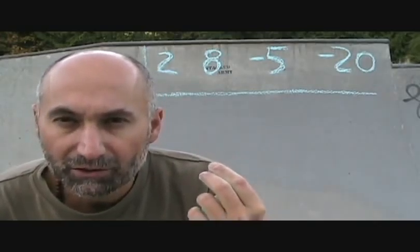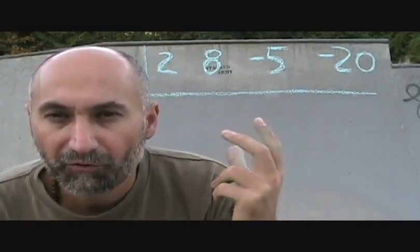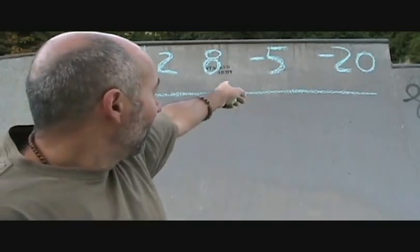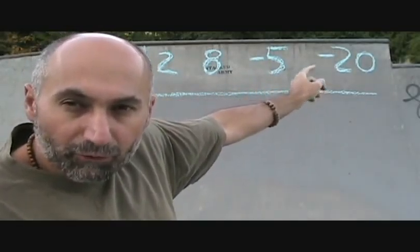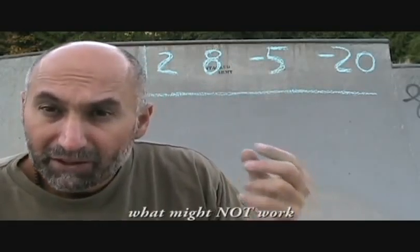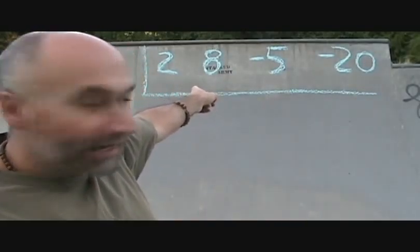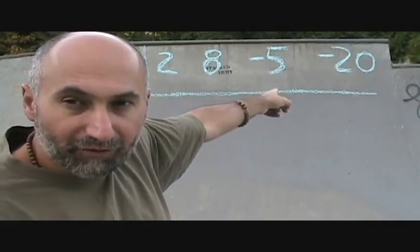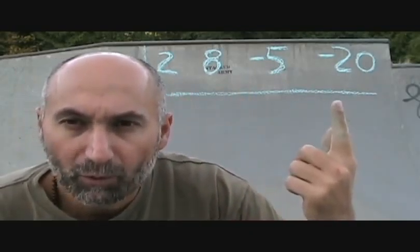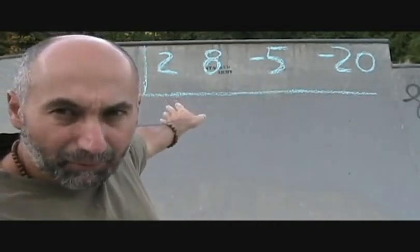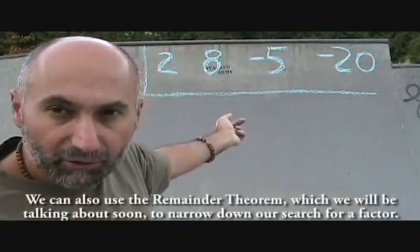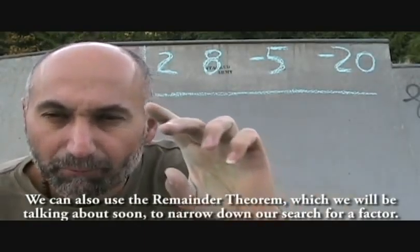The more of these you do, the better idea you'll get of what the possible factor is going to be. Looking at this, you have a 2 and an 8 which are positive, and negative 5 and negative 20. Right away the positives add up to 10 and the negatives add up to negative 25, so you know positive 1 is not going to work because the positives don't balance out the negatives. Negative 1 is probably not going to work either.